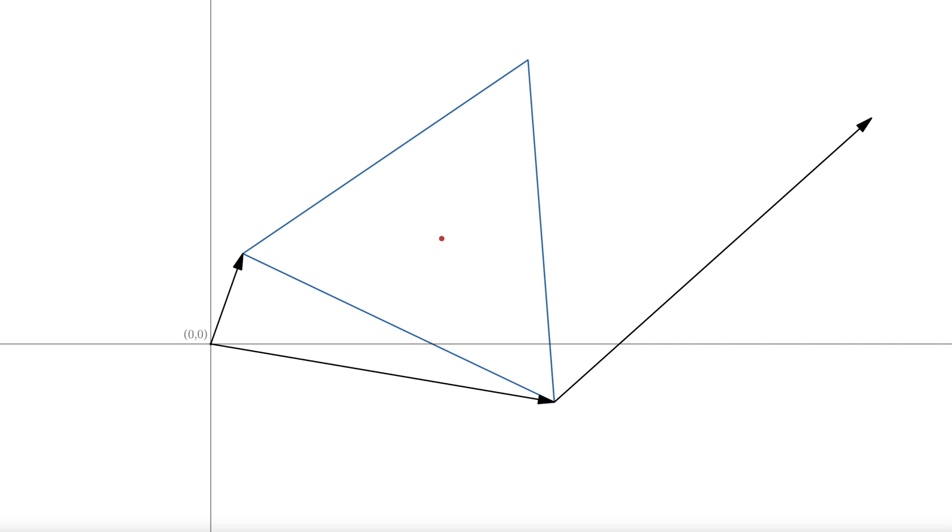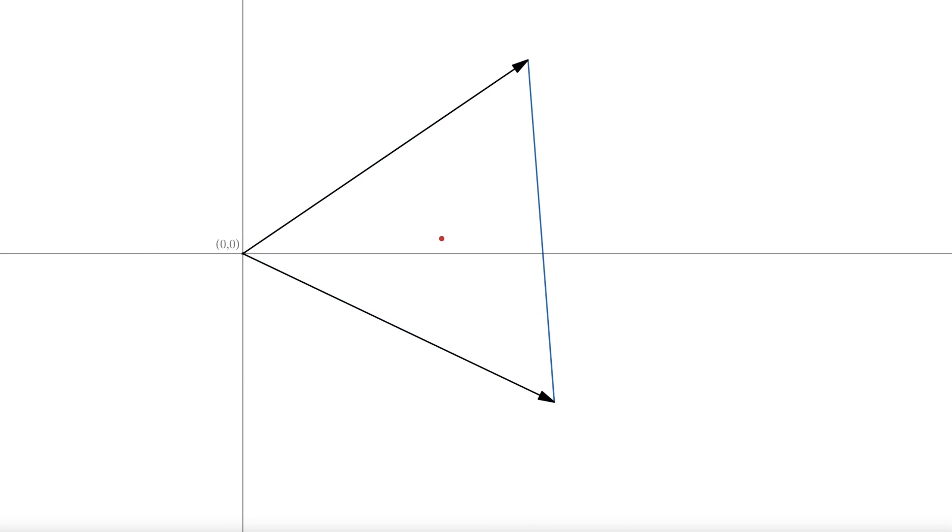Or, if we choose one of the vertices to be the origin, then one of the vectors disappears, and the other two coincide with the sides of the triangle. Again, we can add the vectors and divide by three to find the center. Or, better yet, divide those two vectors by three before adding them together. And that is how we will define the vectors that we'll use for this proof.